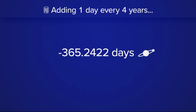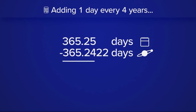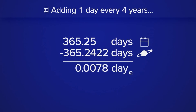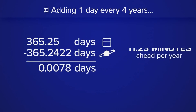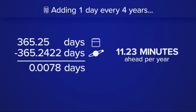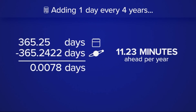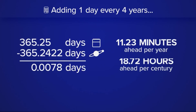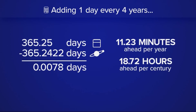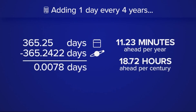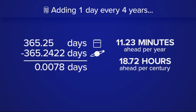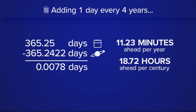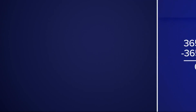When you subtract the amount of time it takes for the earth to complete one revolution around the sun with our solution, you find that we're still 11 minutes off each year. In over 100 years, our calendar would be about 18 hours off. It doesn't sound like a huge problem, but over centuries this would eventually throw off our calendar.